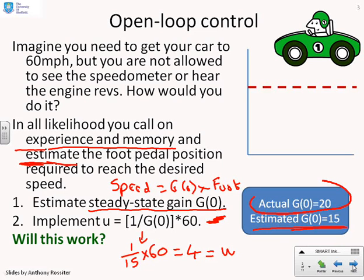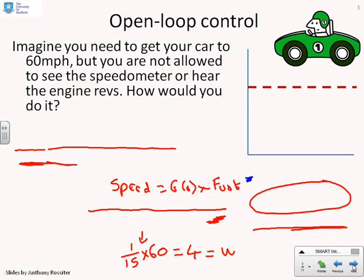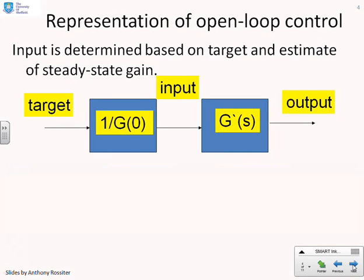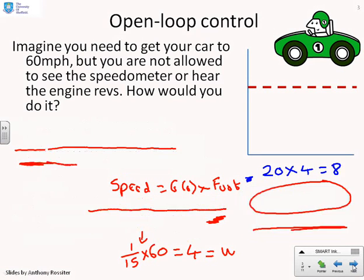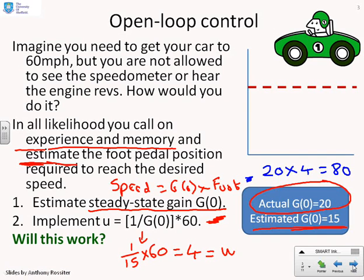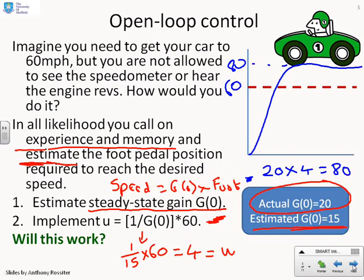However, the actual system gain is 20. So if the actual system gain is 20 and we plug that in, we get 20 times 4 equals 80. Therefore your speed is not going to go to 60 as desired — it's going to go up to 80 and you'll end up with a speeding ticket. The problem is that without being able to read the speedometer or hear the engine revs, you have no information about your actual speed, so you're guessing and you might guess incorrectly.